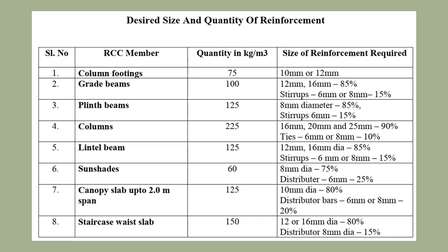For columns, the quantity is 225 kg per cubic meter; 16, 20, or 25 mm diameter bars may be used based on the number of storeys. Column ties or stirrups are 6 mm or 8 mm. Lintel beams require 125 kg per cubic meter, with 12 or 16 mm diameter bars and 6 mm or 8 mm stirrups. Sunshades require 60 kg per cubic meter, and canopy slab up to 2-meter span requires 125 kg per cubic meter.